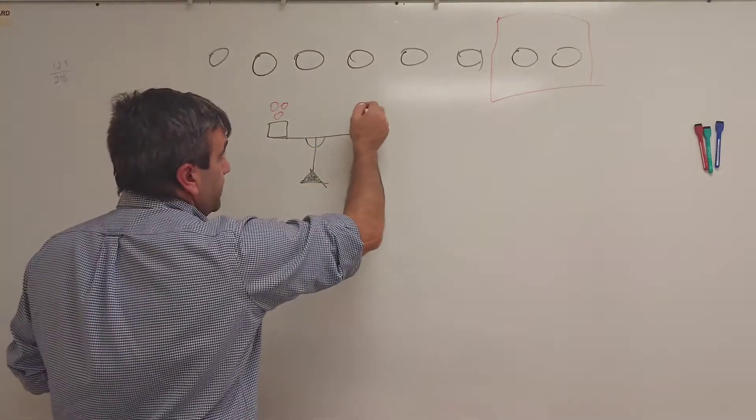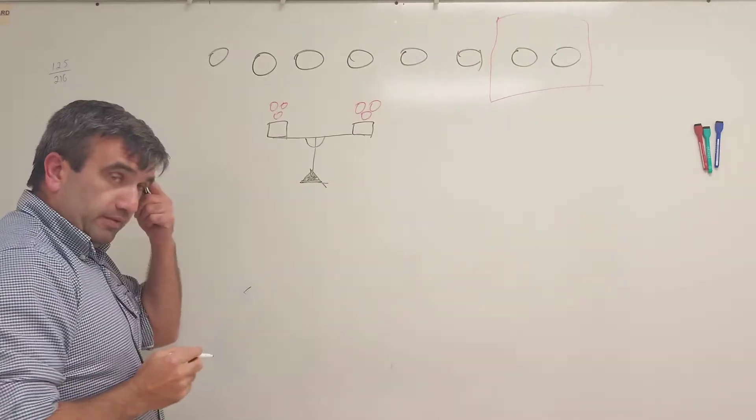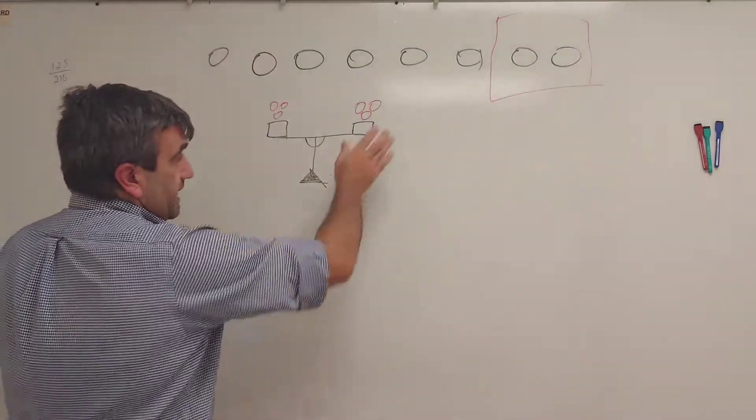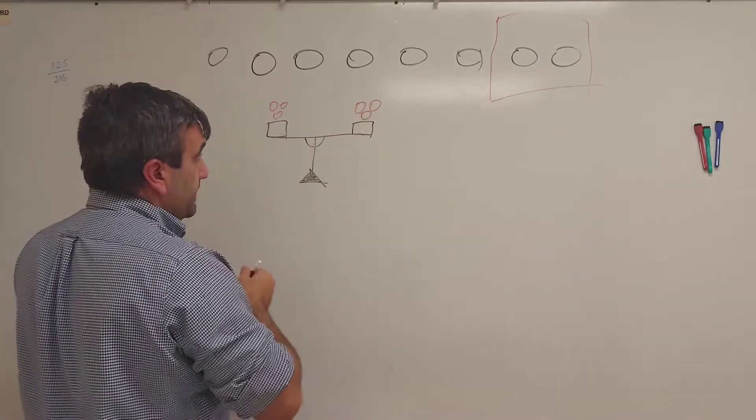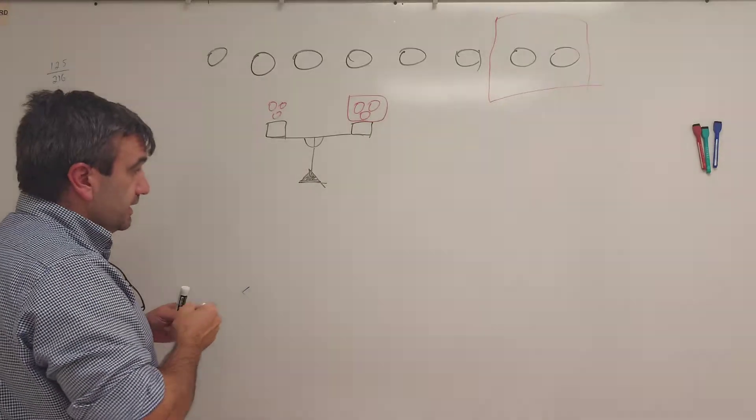We're gonna put three coins here, three coins here. This is the first measurement. Let's say the Bitcoin is on this side.